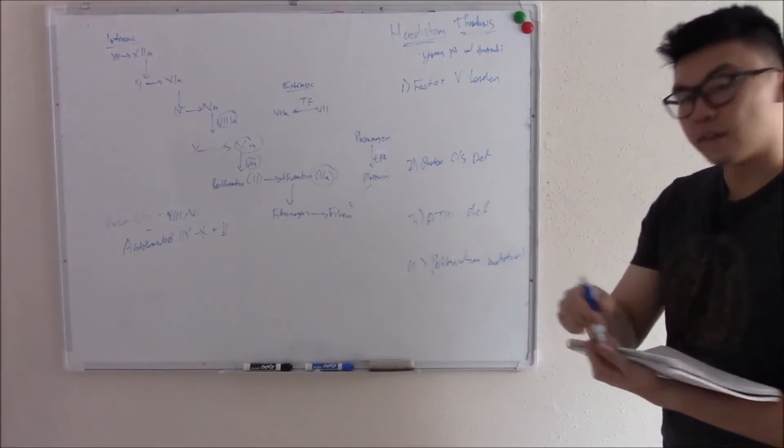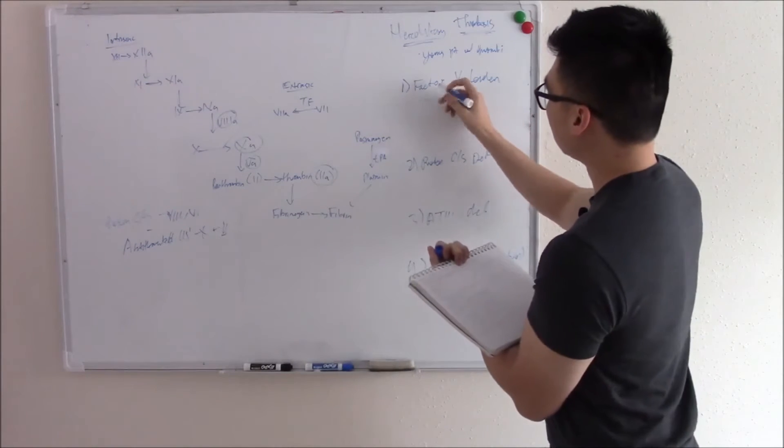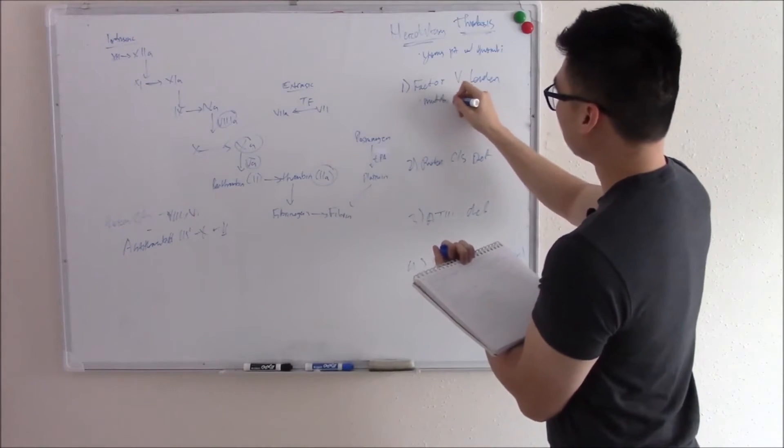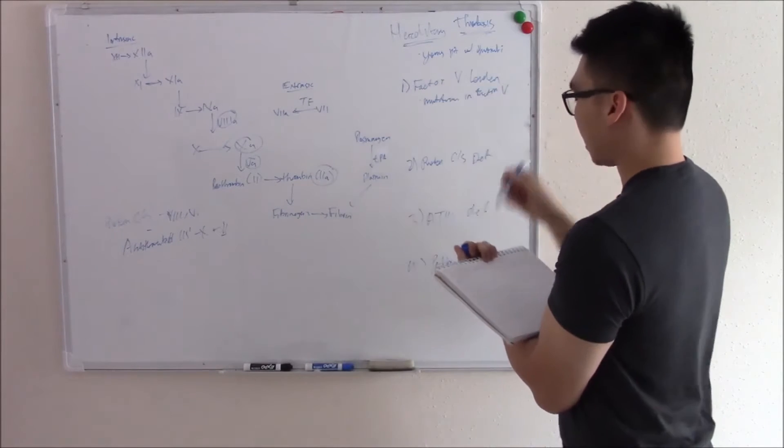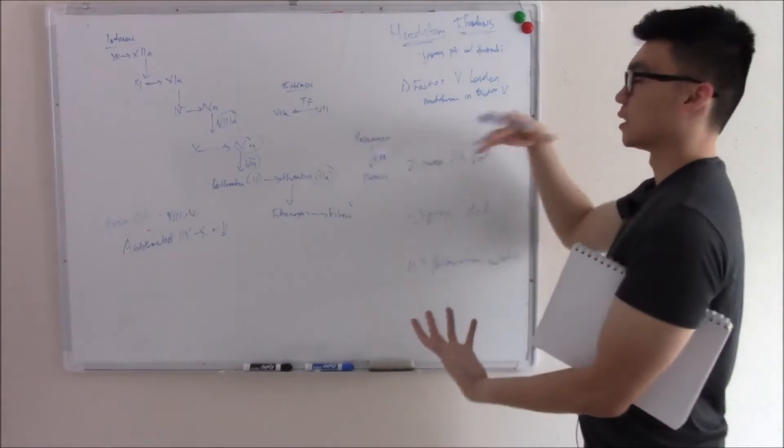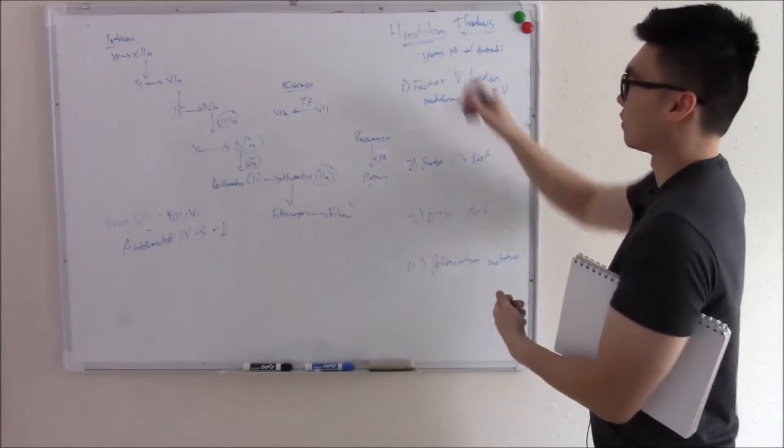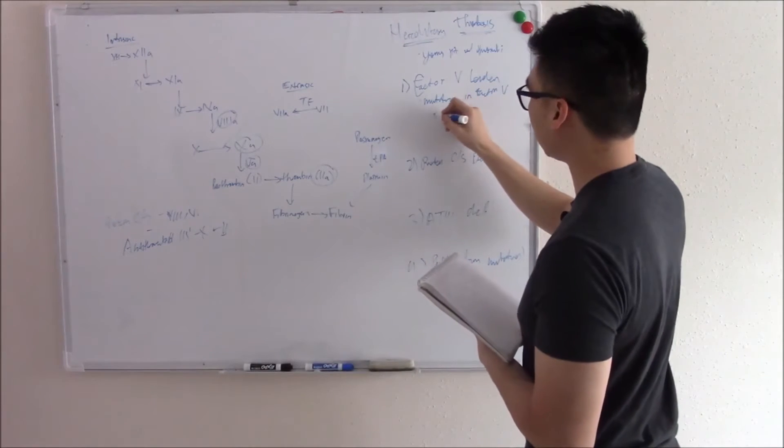See if we can figure these out. Factor V Leiden. This is due to a mutation in factor V. And it's very common in white patients. So if a young white patient comes in and has a history of thromboembolic events, you're thinking factor V Leiden. This mutation in the gene turns a guanine base into an adenine base. So guanine and adenine.